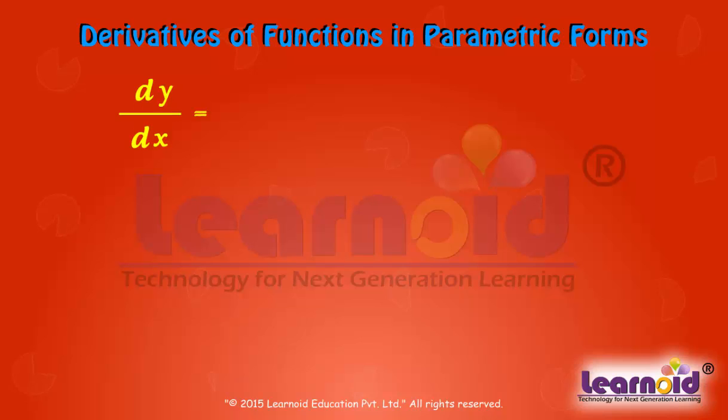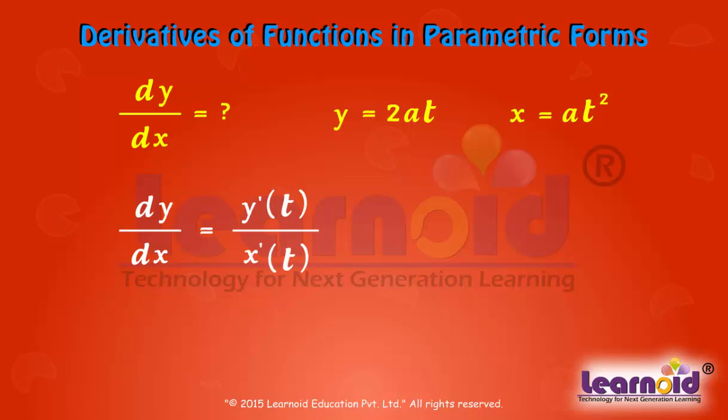Let us find dy/dx when y equals 2at and x equals at squared. x and y are both functions of t. We can write dy/dx equals dy/dt divided by dx/dt.